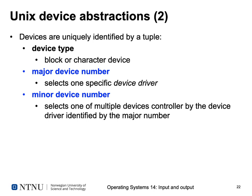For example, the major device number selects the device driver for a disk controller. Since you might have a disk controller with more than one disk attached, you need to differentiate between specific disks. This is encoded in the minor device number, which always indicates a subdivision of the device indicated by the major device number. The minor device number selects one of the multiple devices controlled by the driver identified by the major device number.